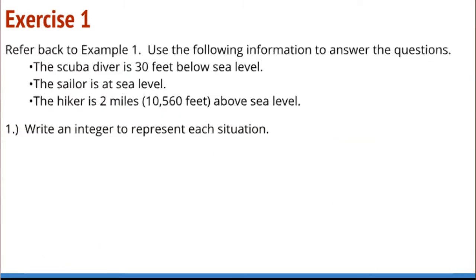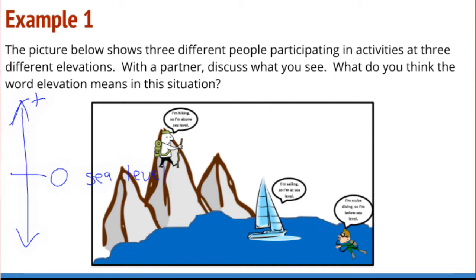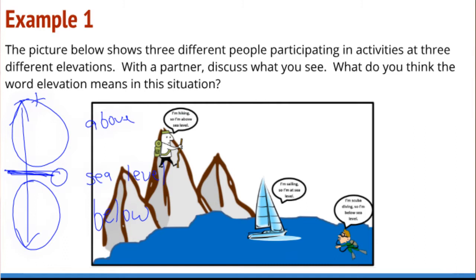If this were a number line, everything is in comparison to sea level, so the level of the sea is equal to zero. The positive numbers are above sea level and the negative numbers are below sea level. So in this situation, zero represents the level of the sea, and we are measuring everything in comparison to the level of the sea. The scuba diver is at a negative elevation and the hiker is at a positive elevation.